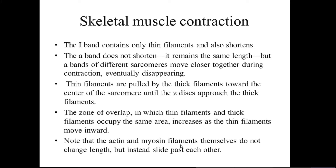The I-band (isotropic band) contains only thin actin filaments and also shortens during contraction. The A-band, which contains both myosin and actin filaments including the H-line, does not shorten — it remains the same length. However, individual sarcomeres from Z-line to Z-line do contract or relax. Thin filaments are pulled by thick filaments toward the center of the sarcomere until the Z-disc approaches the thick filament.